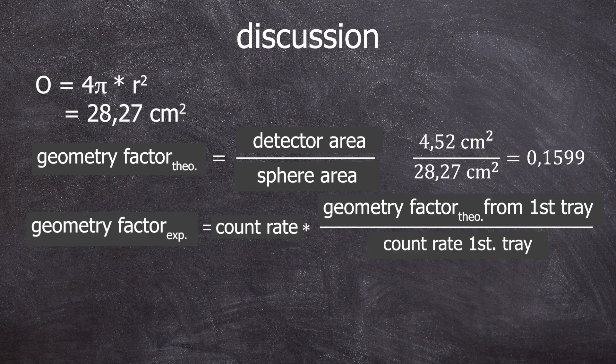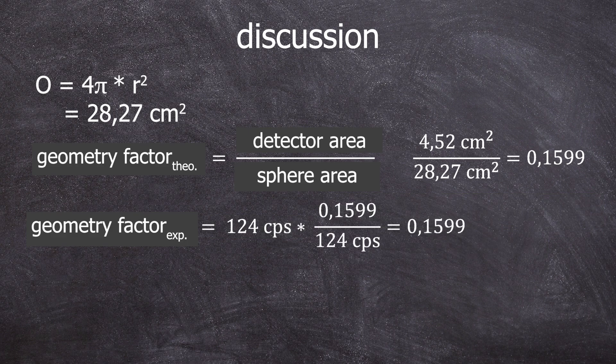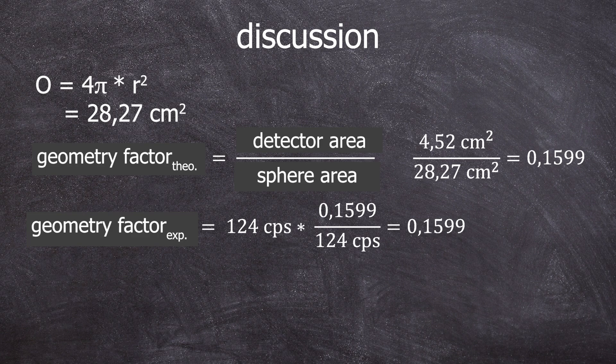The average count rate is 124 counts per second. The experimental geometry factor is now the count rate times the theoretical geometry factor divided by the count rate in the first position, which is the same. Surprise, surprise. The experimental geometry factor is also 0.1599. Yeah, we have set a baseline for now.